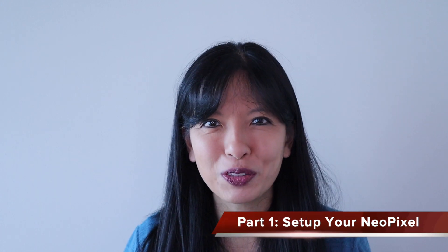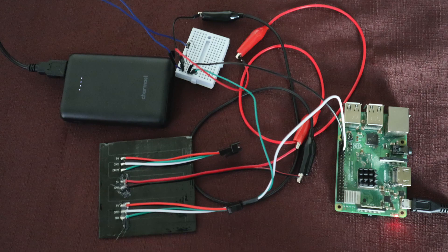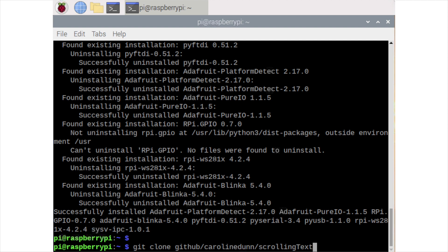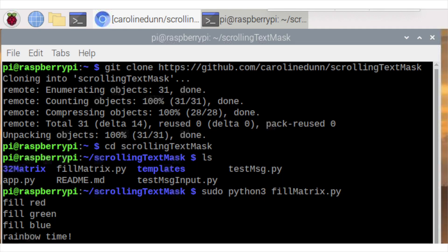In part one, I started with my breadboard and connected the NeoPixel and Raspberry Pi with some jumper wires. The jumper wires and the breadboard are just temporary until we get the project working to our satisfaction. I installed some mandatory packages, and by the end of part one, I had my NeoPixel sample code working that fills the display with various colors and a rainbow.